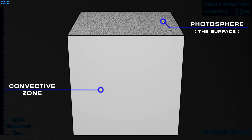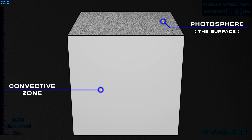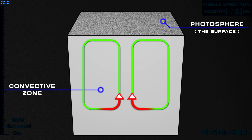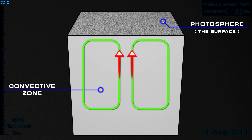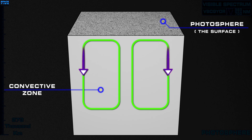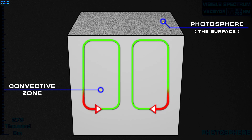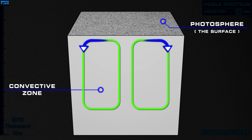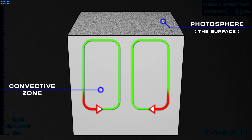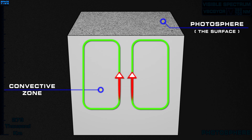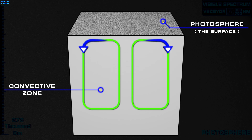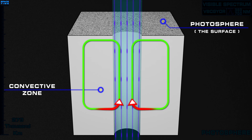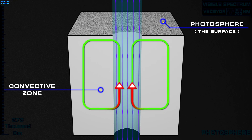This is how a sunspot is formed. The energy deep inside the Sun is transferred from the convective zone to the surface through convective currents. Once the hot plasma rises toward the surface, it loses its heat to the cooler surface, and then sinks back down to be reheated. However, when concentrations of a magnetic field from deep within the Sun reach up to the surface, they inhibit the convective currents, preventing the hot plasma from reaching the surface.